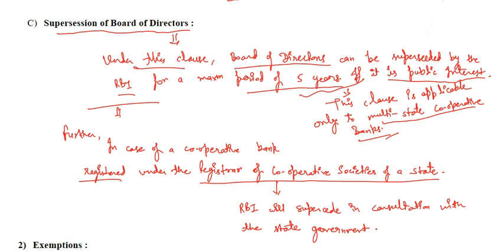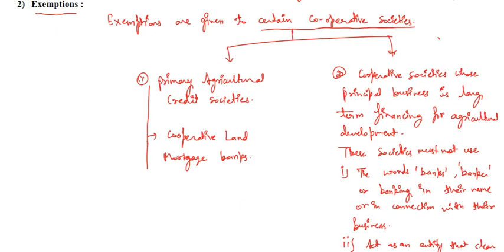Further, in case of a cooperative bank registered under the registrar of cooperative societies of a state, RBI will supersede in consultation with the state government. Only after that can supersession of the board of directors take place. That was the first part. Now moving to the second part, that is the exemption part.